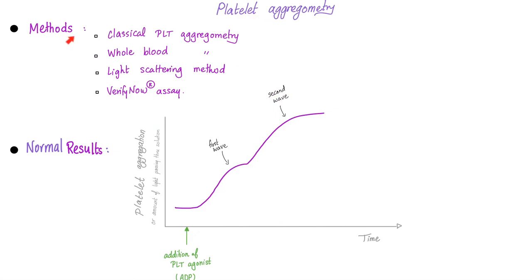What are the methods of platelet aggregometry? We have classical platelet aggregometry, whole blood aggregometry, the light scattering method, and VerifyNow assay. On the normal results graph, the horizontal axis represents time and the vertical axis depicts the amount of platelet aggregation — the higher up on the curve, the greater the platelet aggregation.